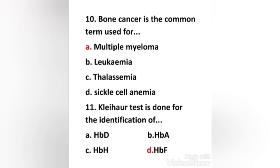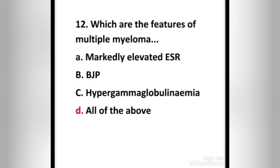Next question: the Kleihauer test is done for the identification of hemoglobin D, hemoglobin A, hemoglobin H, or hemoglobin F? The right answer is option D: hemoglobin F. The principle of this test is to differentiate fetal and maternal blood cells based on the type of hemoglobin present.